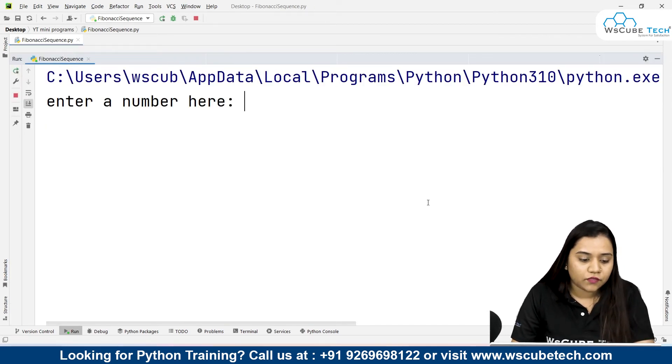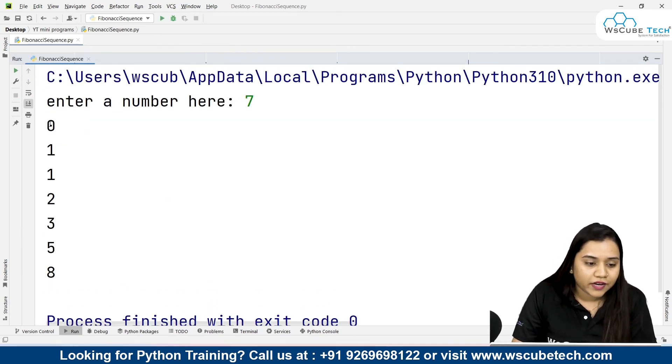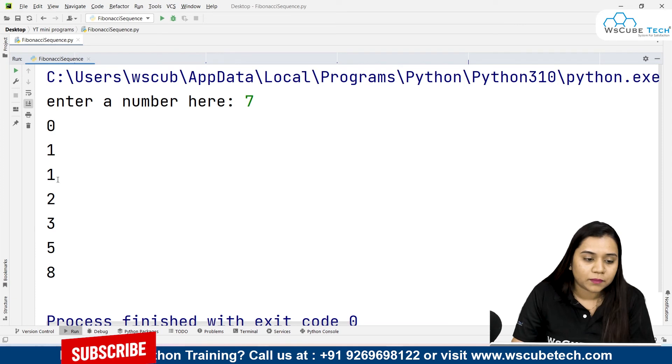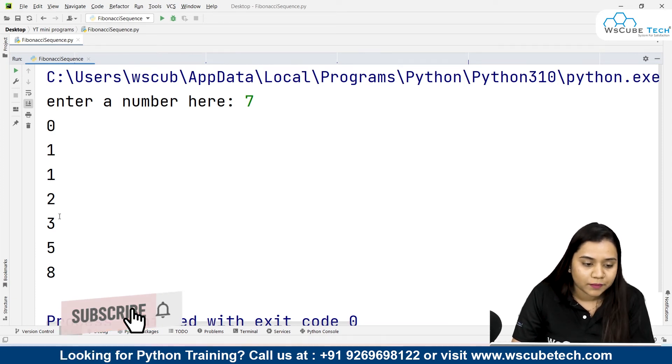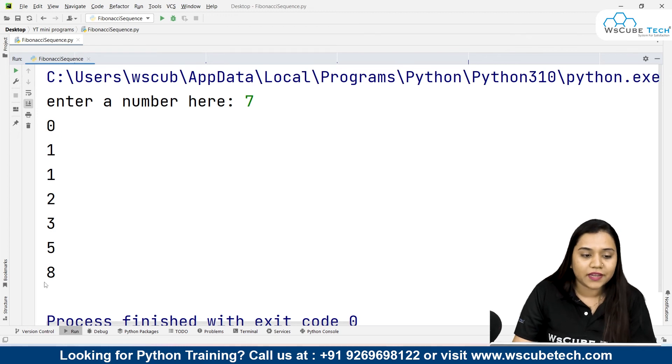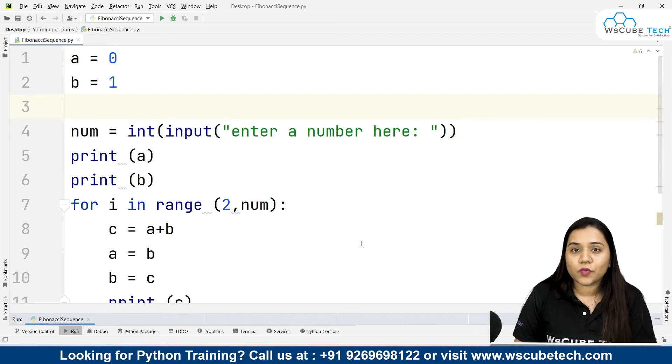So if I run it and if I write over here, let's say I want to obtain Fibonacci sequence up to number 7. So it will write 0, 1, 1, 1 plus 1 will become 2, 2 plus 1 will become 3, 3 plus 2 will become 5, 5 plus 3 will become 8. So up to 7 numbers we have obtained a sequence. So I hope guys that you guys have no doubts and no questions. How we have obtained this sequence.